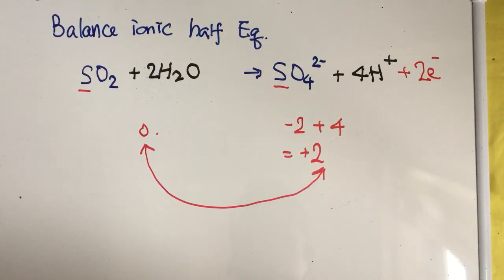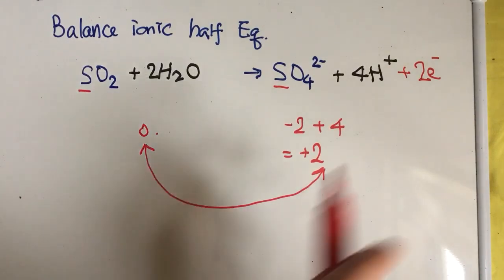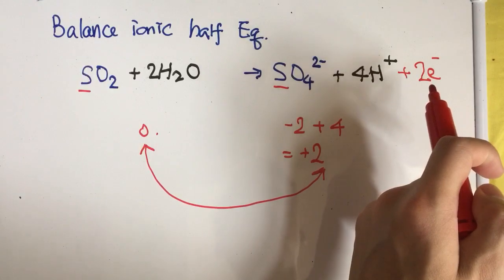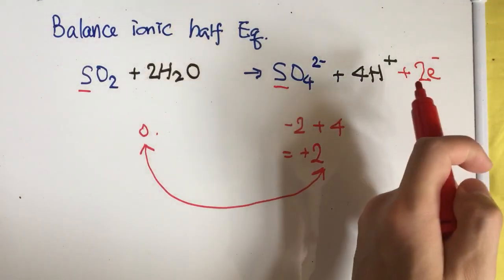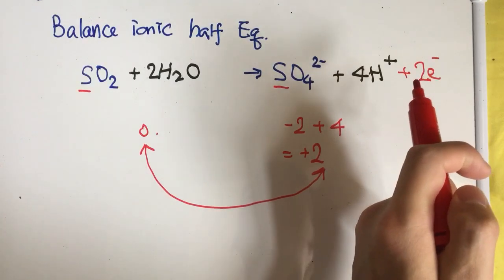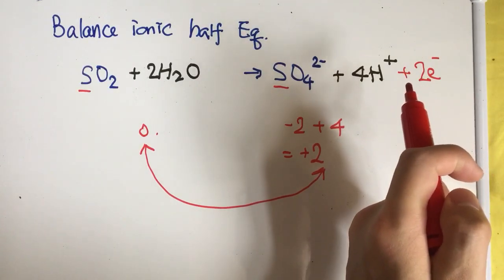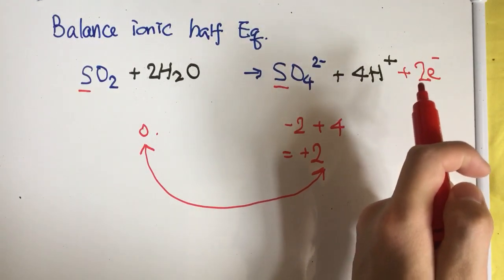This is the ionic half equation of sulfur dioxide. You can see that the electrons on the product side means that during the process, it loses electrons. It is actually an oxidation reaction.